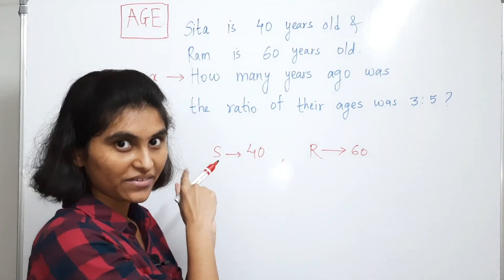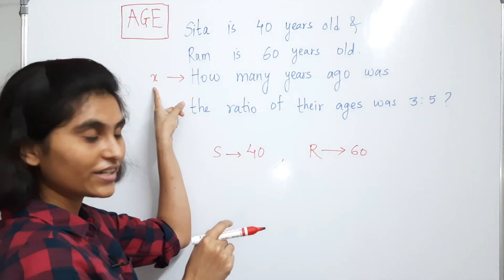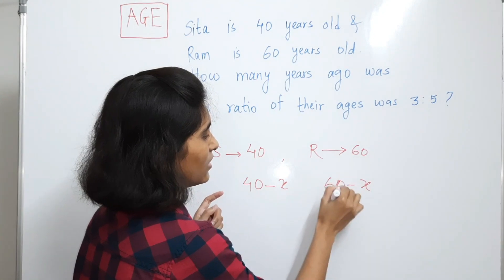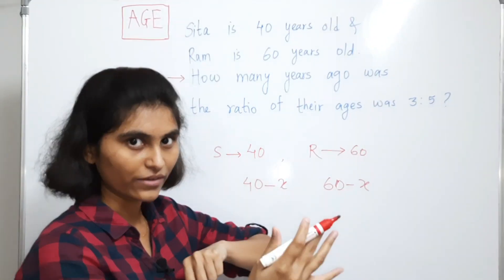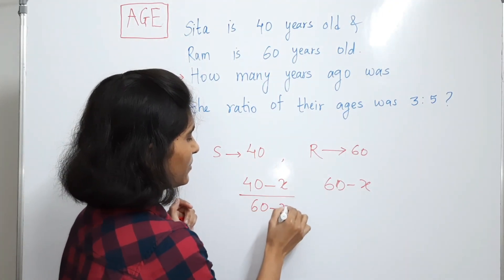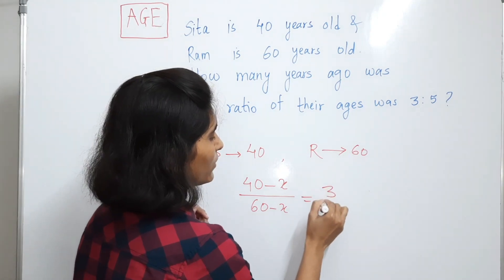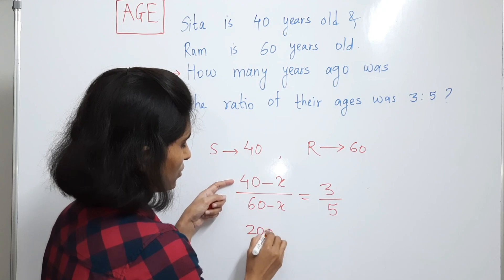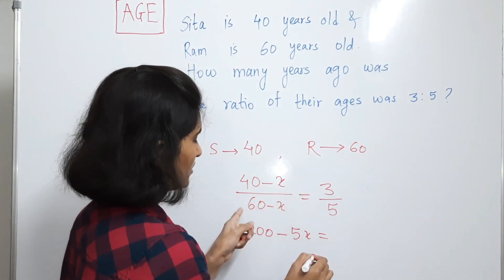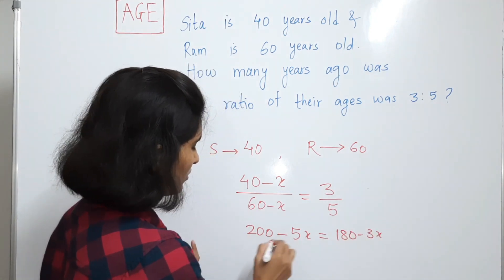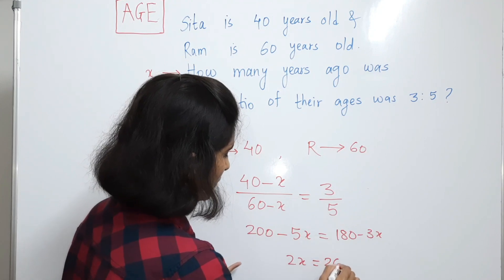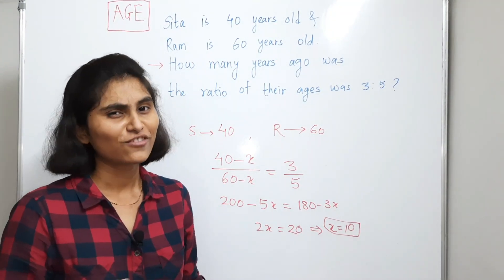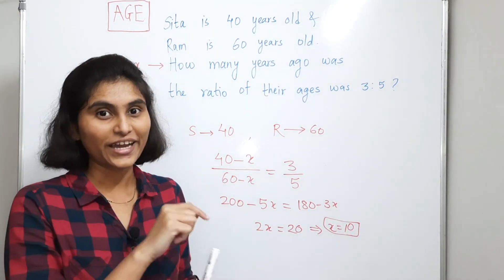All this is happening in the past, so we have to subtract this quantity x from the present ages: 40 minus x and 60 minus x. Since it is given in the ratio 3 is to 5, we write: (40 minus x) divided by (60 minus x) equals 3 divided by 5. Taking cross multiplication: 5 times (40 minus x) equals 3 times (60 minus x), which gives 200 minus 5x equals 180 minus 3x. Solving: 2x equals 20, so x equals 10. Before 10 years, the ratio of their ages was 3 is to 5. This problem is not that difficult once you put it in equation form.